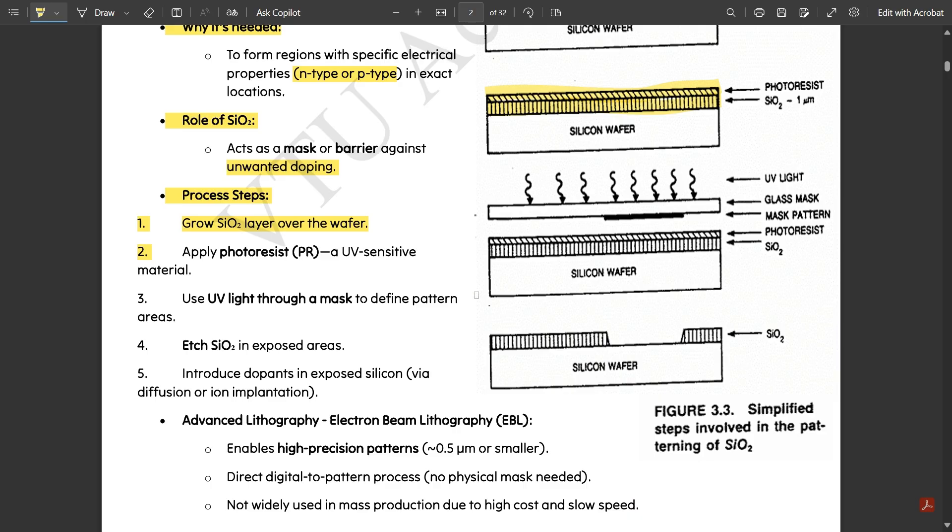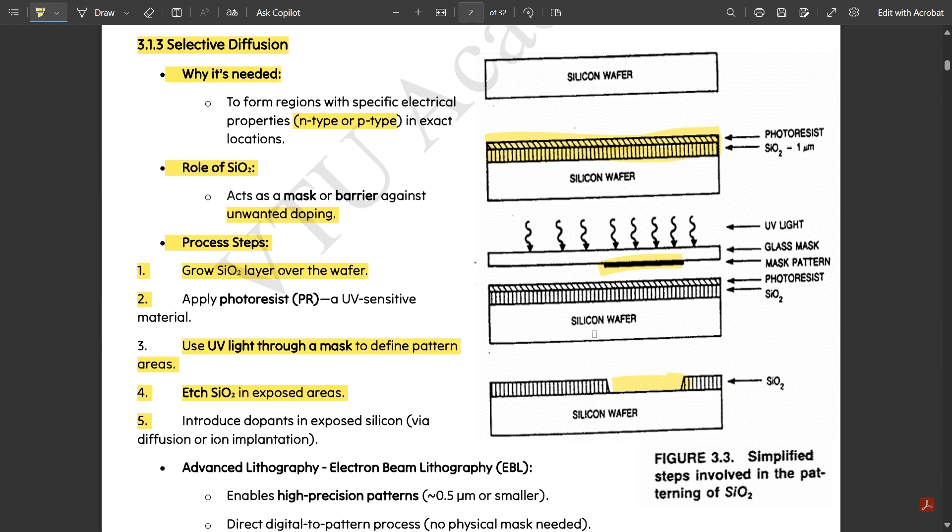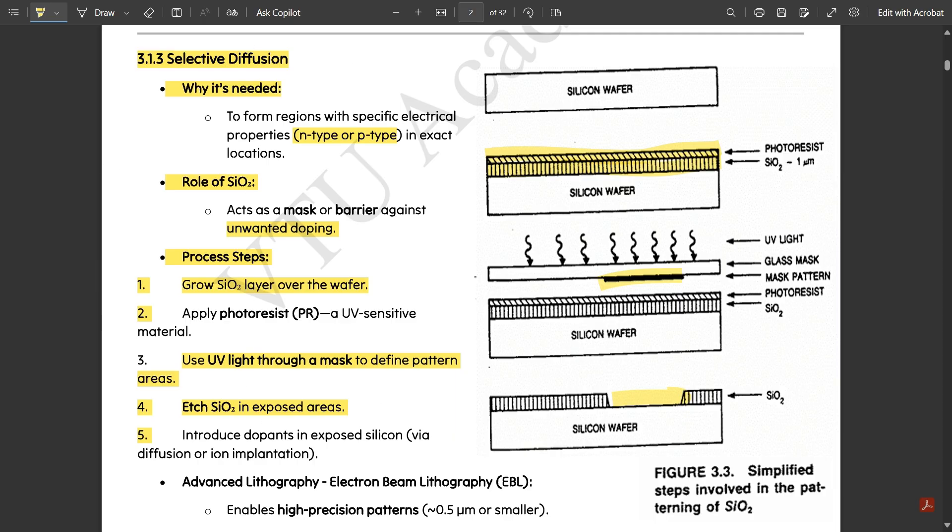Fourth step is etch SiO2 in the exposed area. Next is etching. Wherever the areas are exposed - you see here, this is the exposed area of the reflection of light - using that you should bring it closer to the photoresist material, then the etching takes place in that particular area. Next, introduce the dopants: introduce dopants in exposed silicon via diffusion or ion implantation. Either diffusion process or ion implantation, it is one and the same. In that etched area you should be doing it.